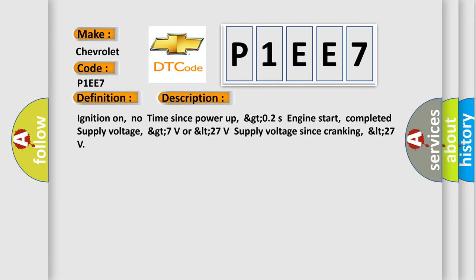Ignition on, no time since power up, greater than 0.2s engine start, completed supply voltage, greater than 7 volts or less than 27 volts supply voltage since cranking, less than 27.